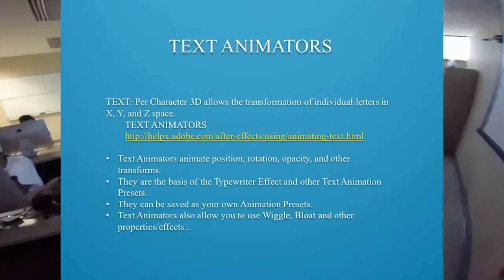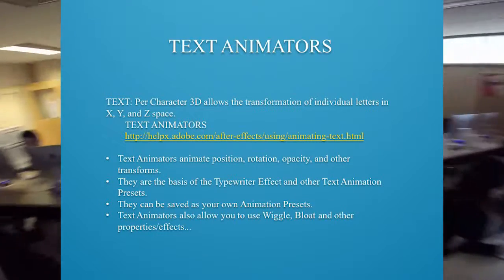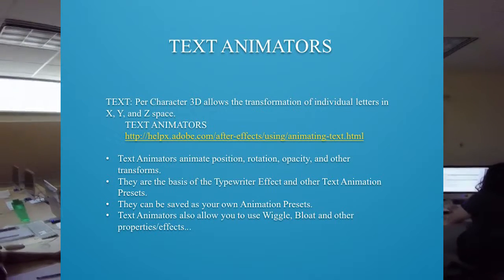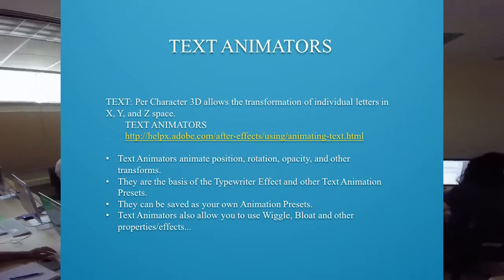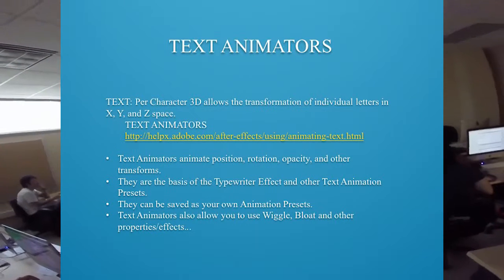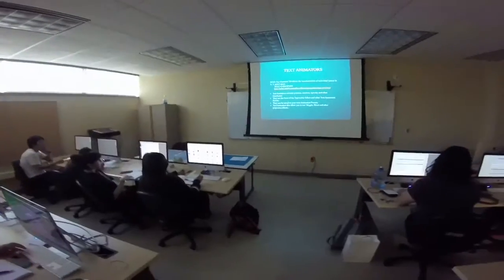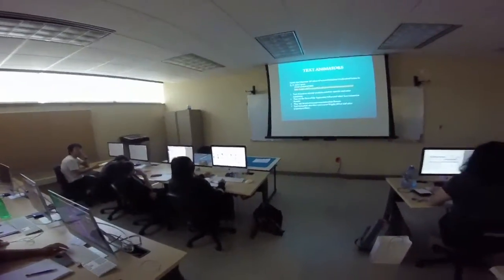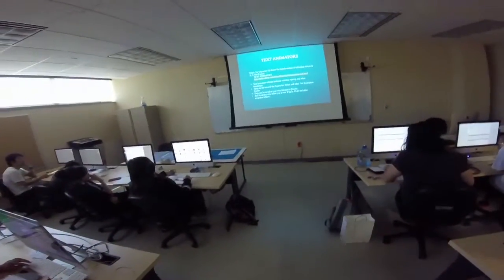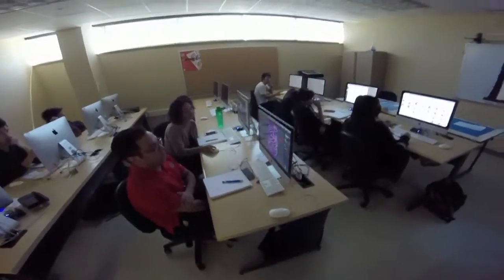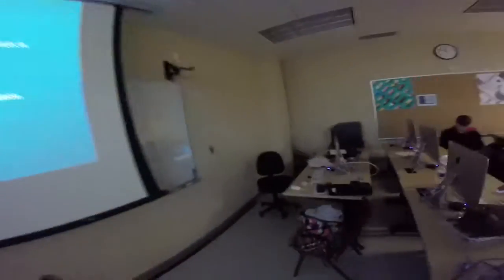Text animators can be very fun, and in X, Y, and Z they can be even more fun. Per character 3D allows the transformation of individual letters in X, Y, and Z space. Text animators will animate position, rotation, opacity, and other transforms. They are the basis of the typewriter effect and other text animation presets. They can be saved as your own animation presets, and they also allow you to use wiggle, bloat, and other properties. You've all used text animators, so if you see a question about them, you should be able to handle it.